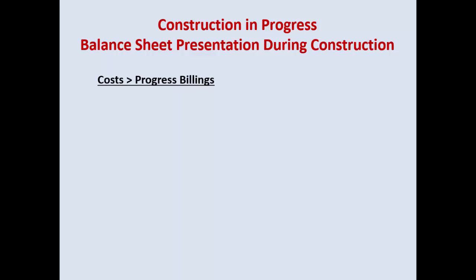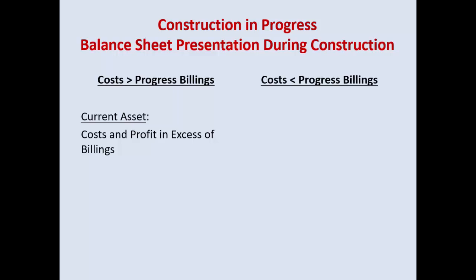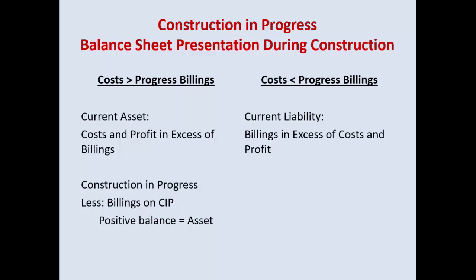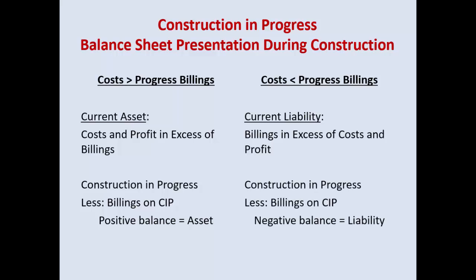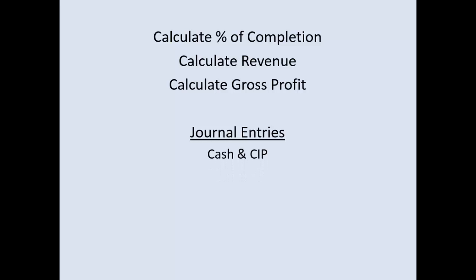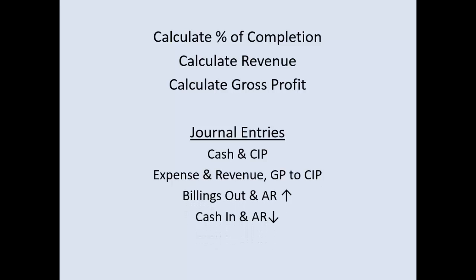For balance sheet presentation over time: if costs plus profit exceed progress billings, it's a current asset — 'cost and profit in excess of billings.' If billings exceed costs, it's a liability because you've billed more than you've actually incurred. Watch your balance sheet presentation: positive balance is an asset, negative balance is a liability. To summarize: calculate revenue, calculate gross profit, then do journal entries in order — cost to CIP, revenue and gross profit to CIP, billings, then cash receipt.